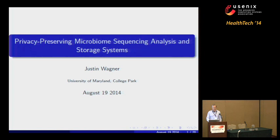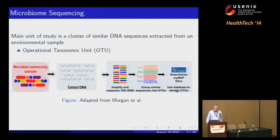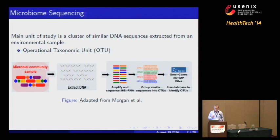First, I'll talk about what microbiome sequencing is. The goal of microbiome sequencing is to study and analyze microbial communities that can't easily be cultured in the lab. The main unit of study is to use clusters of similar DNA sequences extracted from an environmental sample, and these are called operational taxonomic units, or OTUs. We're collecting a sample from the environment and grouping similar sequences of DNA — that is an operational taxonomic unit.